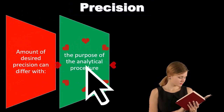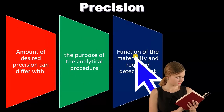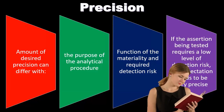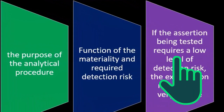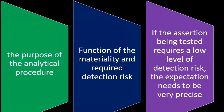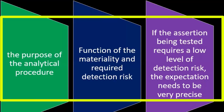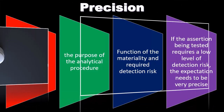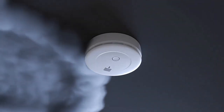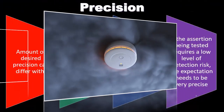Precision relates to the potential effectiveness of an analytical procedure, the degree of reliance that can be put on the procedure, and how closely the expectation approximates the correct but not known amount. The amount of desired precision can differ based on the purpose of the analytical procedure, the function of materiality, and required detection risks. If the assertion being tested requires a low level of detection risk, the expectation needs to be very precise.